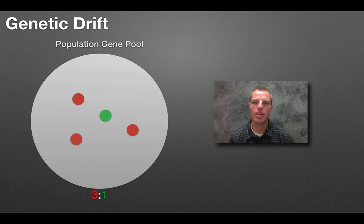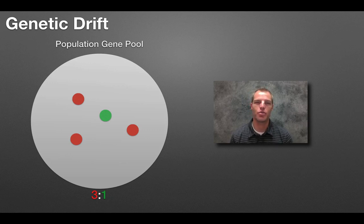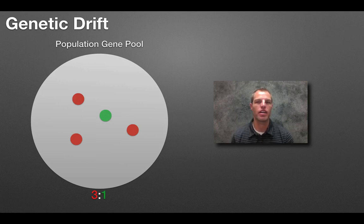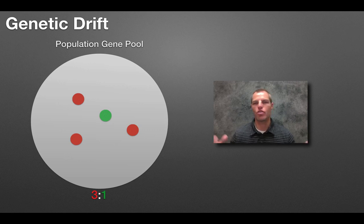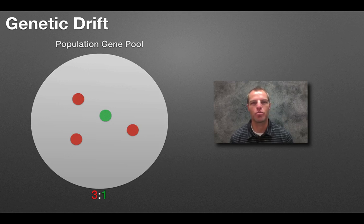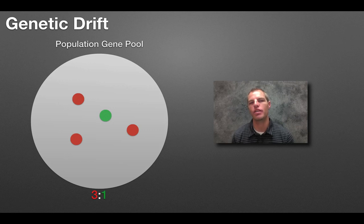If we have a group of 10 organisms and a tornado blows through and kills most of them, leaving two, genetic drift is really going to affect that group — the gene pool just got shrunk very quickly. But if we had a group of 10,000 organisms and a tornado kills a portion of them, it's not going to affect that population as much. Genetic drift really affects populations that are smaller in size, shifting gene frequencies to something very different from what they were before.